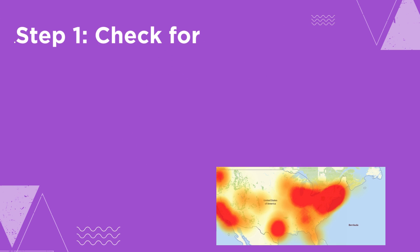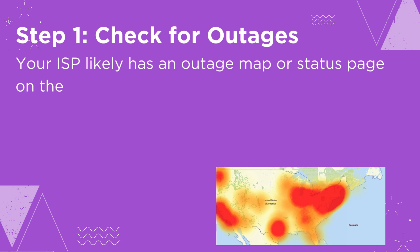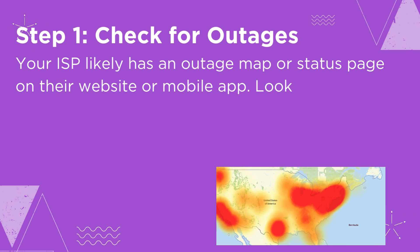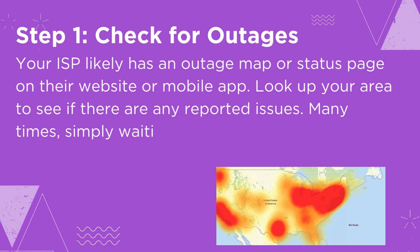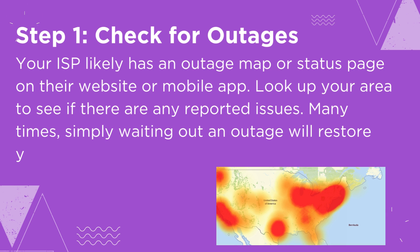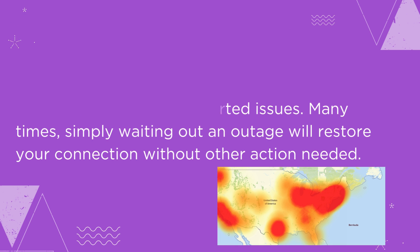Step 1: Check for Outages. Your ISP likely has an outage map or status page on their website or mobile app. Look up your area to see if there are any reported issues. Many times, simply waiting out an outage will restore your connection without any other action needed.